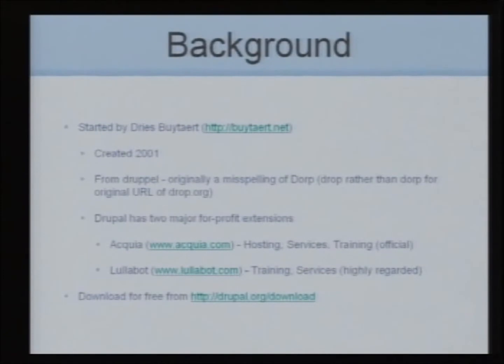A quick background on Drupal — like all sorts of things that came from Europe, it was started by a man named Dries, who is Flemish. He started in 2001 and finished his PhD in 2008. The actual word came from the Dutch word for a drop. He misspelled 'dorp' and registered drop.org when he first started — 'dorp' would be a village — so that's where the name came from. It doesn't actually mean anything.